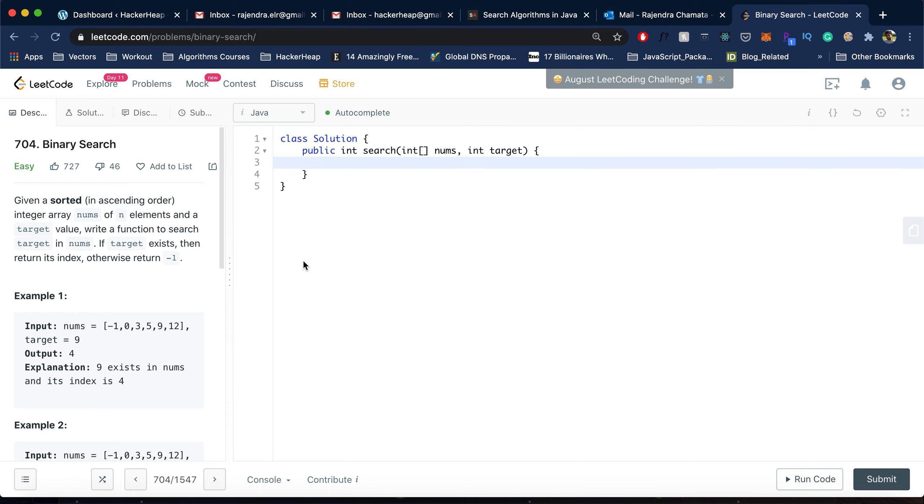In a binary search, what we are doing is we are dividing the given collection, in this case nums, into two equal halves by finding the mid. The left index initially would be zero which is a starting point, and the right index would be nums.length minus one.